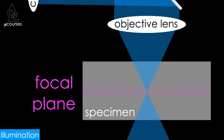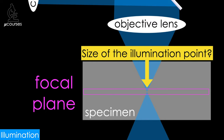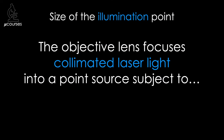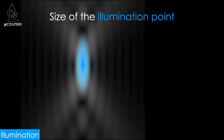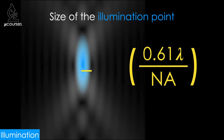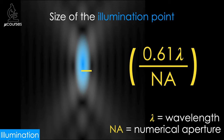So the light is focused into a point. You might be wondering: what is the size of the illumination point? The objective lens focuses collimated laser light into a point source that's subject to the point spread function. The expected size of the illumination point can therefore be calculated using the resolution equation. The resolution equation gives us the expected radius of the point source, which is equal to 0.61 times the wavelength of light divided by the numerical aperture of the objective lens. We can double this number to get the diameter of the point source.